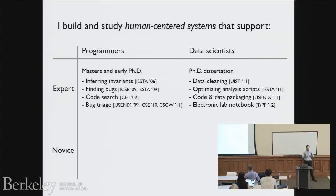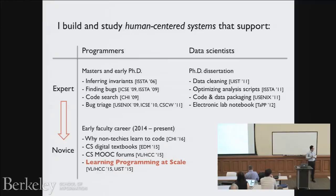I started as a PhD student working in programming languages and software engineering, building tools for professional programmers. That was my PhD work. After my PhD, I decided to move from the expert to the novice angle. One big reason was impact — there's always going to be an order of magnitude more novices than experts in any field. So in the past year and a half I've been doing studies and building tools to help novice programmers.